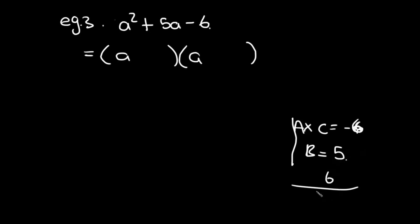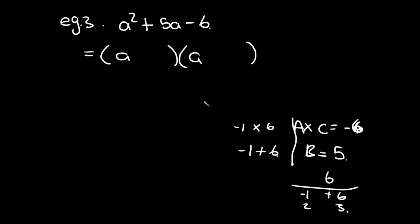The factors of 6 are 1 & 6 and 2 & 3. Looking at 1 and 6 — if one is positive and one is negative, we get -6 when multiplied. We need them to add to +5, so positive 6 and negative 1 works: (+6) × (-1) = -6, and (+6) + (-1) = +5. So our answer is (a - 1)(a + 6).